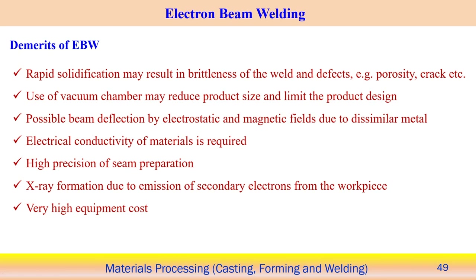Disadvantages of electron beam welding: rapid solidification occurs under vacuum, inducing defects, brittleness, porosity, and cracking in the component. Use of the vacuum chamber limits the size of workpiece that can be handled — very large workpieces may not fit within the vacuum chamber, so component size is determined by the size of the vacuum chamber.